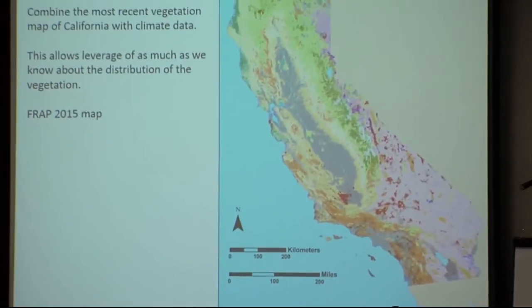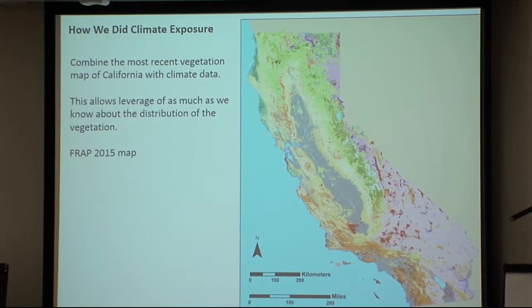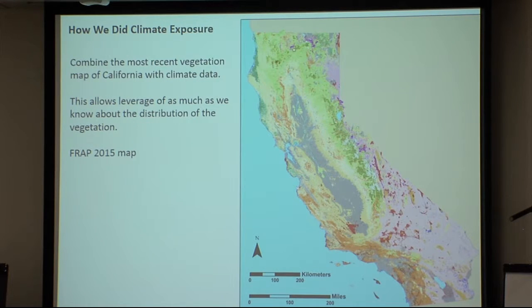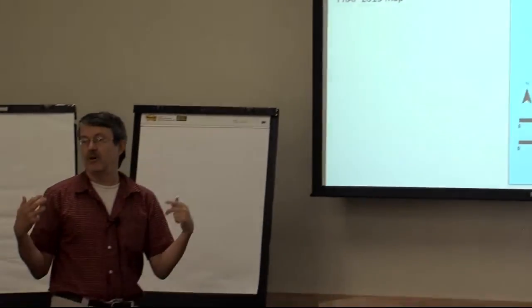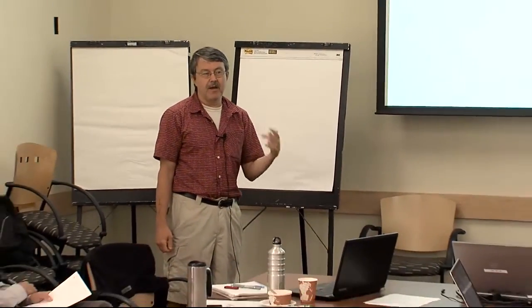So how do we do the climate exposure analysis? We started with the 2015 vegetation map that the state and UC Davis worked on to produce — the most recent FRAP map, at 30 meters. It's produced by CAL FIRE and available on the FRAP website, and it has our current best map of vegetation. We took this map and looked at a national classification called macro group. We're using two GCMs and two emission scenarios — MIROC and CRN, and RCP 4.5 and RCP 8.5 — as our analyses.